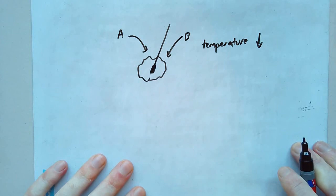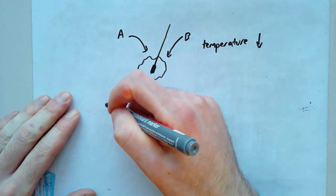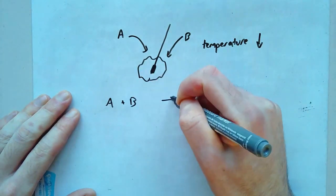Well, what's happened here? Let's say A and B together make C.